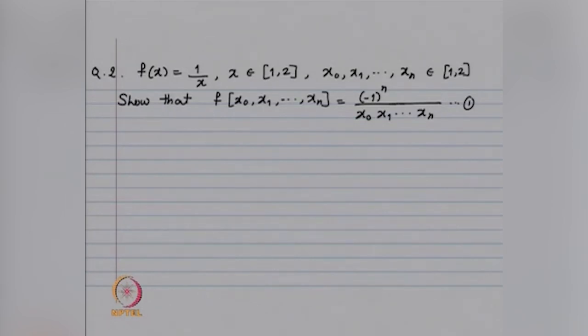Now look at the second problem. We are looking at f(x) = 1/x on the interval [1, 2]. We want to prove that the divided difference f[x_0, x_1, ..., x_n] is given by (-1)^n divided by x_0·x_1···x_n. In this problem, induction is going to work. We will use the recurrence formula for divided differences. For n = 0, one quickly sees the result is true. Assume the result is true for n = m-1, then using the recurrence formula prove the result for n = m.